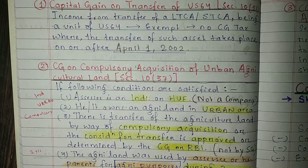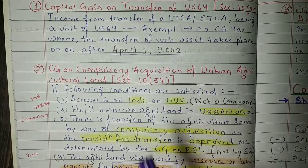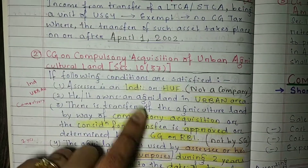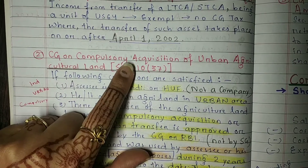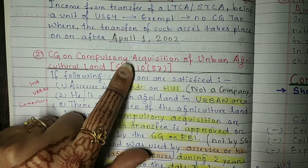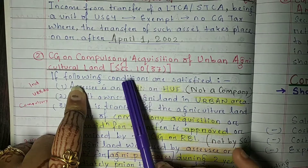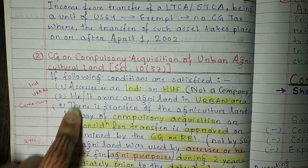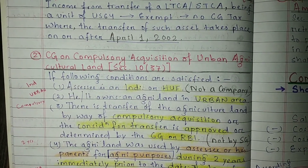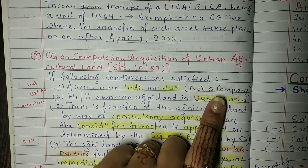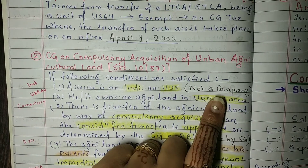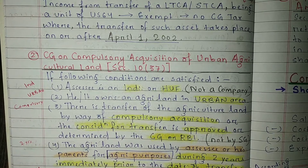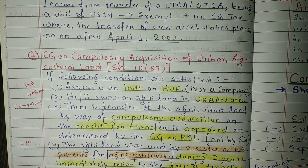The government made this provision so that people would not hold onto their units and sell them. Second provision: capital gain on compulsory acquisition of urban agricultural land under Section 10 clause 37. If you have agricultural land in an urban area and the central government wants to compulsorily acquire it, then whatever income or earnings you receive from that, you do not need to pay tax on it — it is exempted under Section 10.